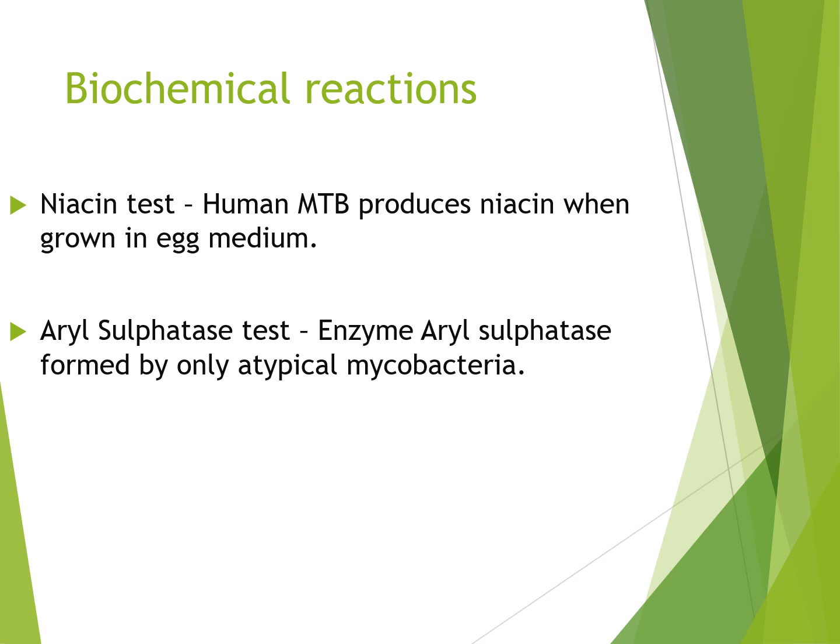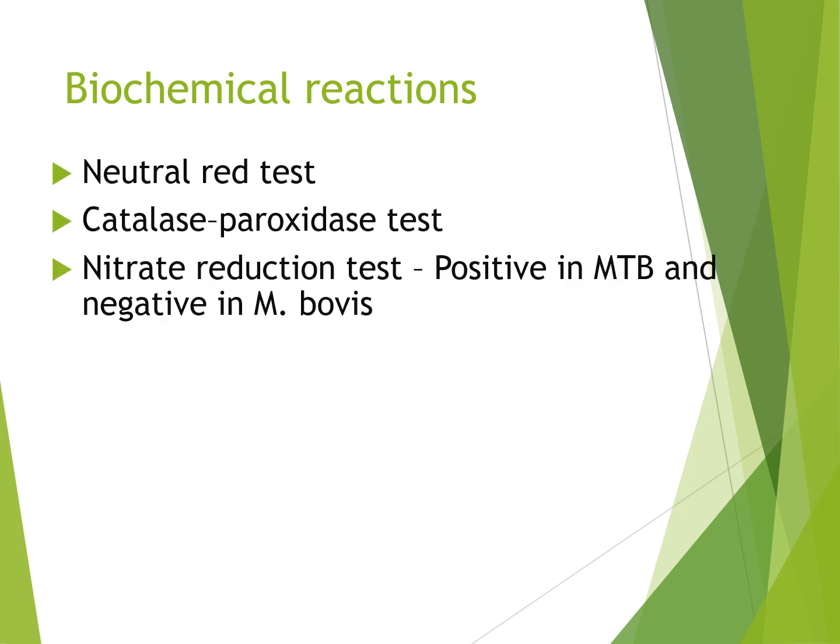For biochemical reactions, you can use the Niacin test. Human Mycobacterium tuberculosis can produce niacin when grown in egg medium. You can also use the Arylsulfatase test — the enzyme arylsulfatase is formed by only atypical mycobacteria. The Neutral Red test shows that virulent strains of tubercle bacilli bind neutral red in alkaline solution while avirulent strains do not. The Catalase-Peroxidase test shows most atypical mycobacteria are strongly catalase positive while Mycobacterium tuberculosis is weakly positive. Mycobacterium tuberculosis is strongly peroxidase positive while atypical mycobacteria are negative. Niacin reduction tests are positive in Mycobacterium tuberculosis and negative in Mycobacterium bovis.